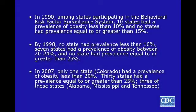Some notable trends. In 1990, among states participating in the Behavioral Risk Factor Surveillance System, 10 states had a prevalence of obesity less than 10%, and no states had prevalence equal to or greater than 15%. By 1998, however, no states had prevalence less than 10%, 7 states had a prevalence of obesity between 20% and 24%, and no state had prevalence equal to or greater than 25%.